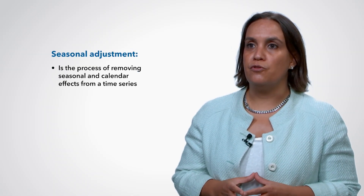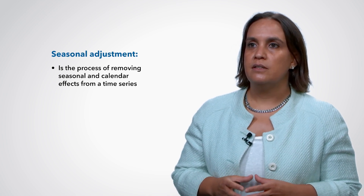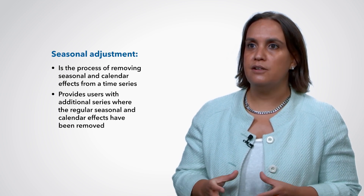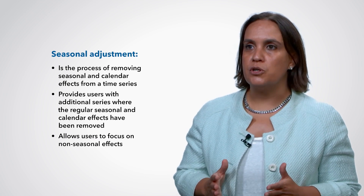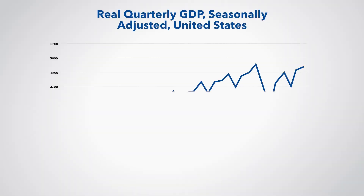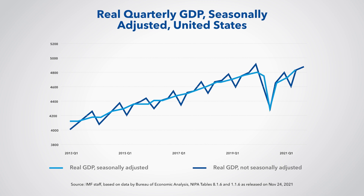Seasonal adjustment is the process of removing seasonal and calendar effects from a time series. The purpose of seasonal adjustment is to provide users with additional series where the regular seasonal and calendar effects have been removed, allowing the user to focus on the non-seasonal effects. In the chart we see that the seasonally adjusted real GDP series does not exhibit the regular first-quarter decline that appeared each year in the unadjusted series. The seasonally adjusted series does not, however, remove all declines — it retains the large decline in the first and second quarters of 2020 associated with the COVID-19 pandemic. Thus, by eliminating the routine seasonal patterns, the seasonally adjusted series highlights the more meaningful events and cycles.